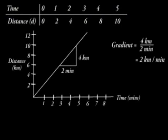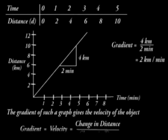The gradient of the curve is equal to 4 over 2, giving us 2 kilometers per minute. The gradient of such a graph gives the velocity of the object. That is, gradient is equal to velocity which is equal to change in distance over change in time.